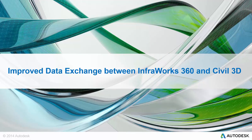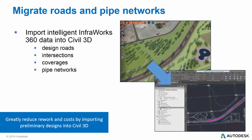I'm going to kick it off with one of the biggest improvements — a new way to migrate data from InfoWorks 360 to Civil 3D and back to InfoWorks 360. The first new component of the improved workflow is the way data is moved downstream. Intelligent data in InfoWorks 360, such as design roads, intersections, coverages, and pipe networks, can easily be brought into Civil 3D. This new workflow reduces rework as preliminary designs can now be imported into Civil 3D to help accelerate the detailed design process.